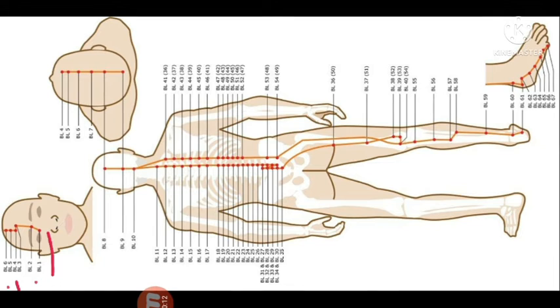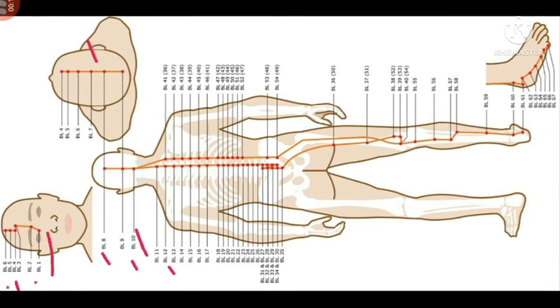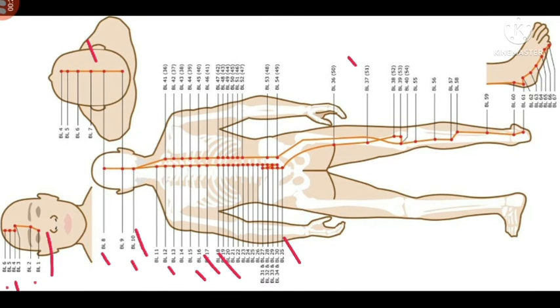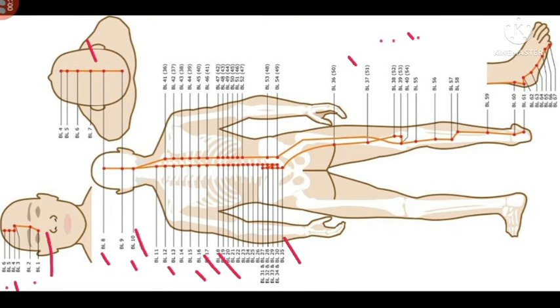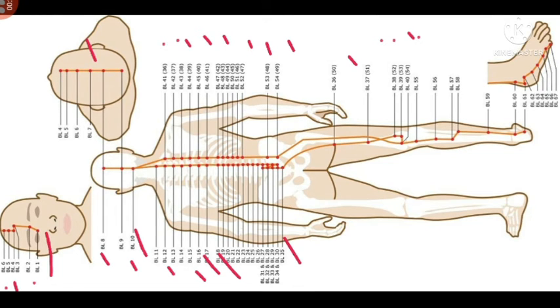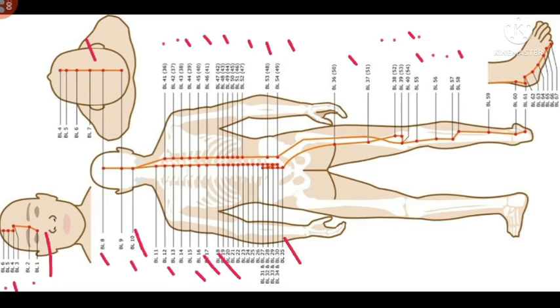BL1, 2, 3, 4, 5, 6, and from here 7, 8, 9, 10, continuing in this way up to 35, then 36, 37, 38, 39, 40, from 40 continuing 41, 42, 43, 44, starting at 54, then 55, 56, 57, 58, and the last point is BL67.